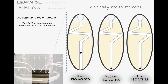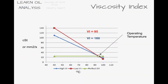Traditionally, the measurement is done by eye with a stopwatch, but most labs now use automated systems that automatically detect the flow rate. I have mentioned that viscosity measurement is done at certain temperatures. This is because viscosity is not fixed — it changes with temperature. You only need to think of putting oil into a frying pan, how it goes more runny when heated. This change in viscosity with temperature is called a viscosity index, or VI.